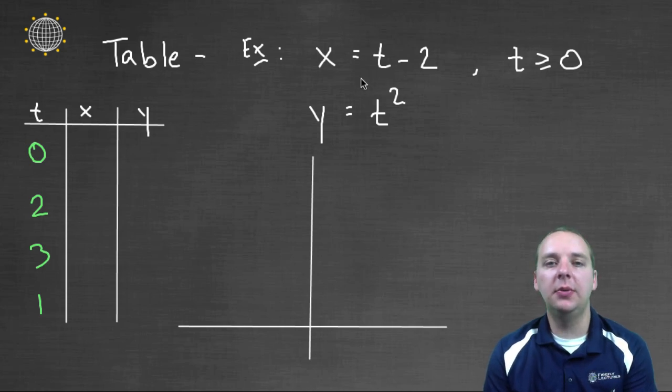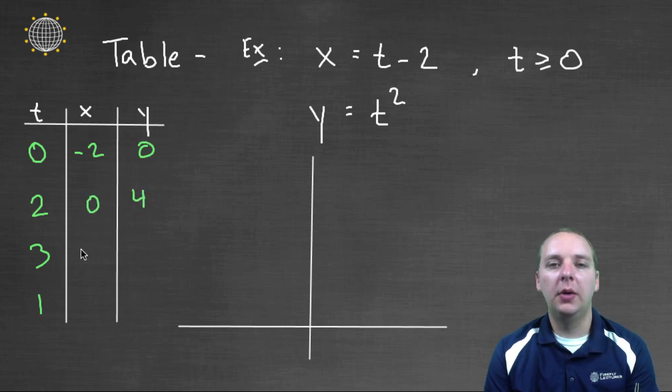Let's try it. If t was zero, you would get negative two comma zero. Zero minus two is x, zero squared is y. You plug in a two, you'd be at zero comma four. Plug in a three, you'd be at one comma nine. Plug in a one, you would be at negative one comma one.